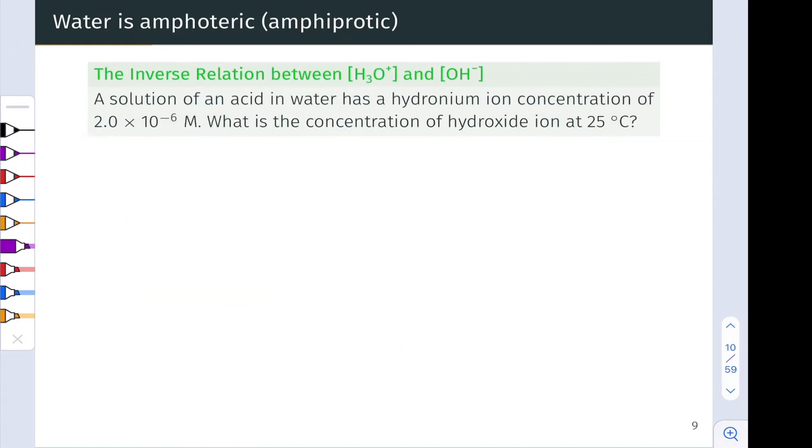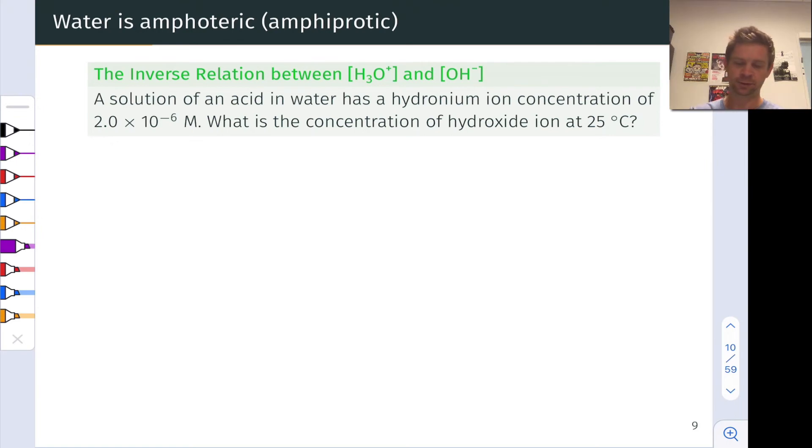Acids and bases can generate hydronium and hydroxide respectively in water. When an acid is dissolved in water, the hydronium ion concentration becomes quite a bit greater than 10 to the negative 7 moles per liter. In this problem we're told that a solution of an acid in water has a hydronium concentration of 2 times 10 to the negative 6 moles per liter. We're asked, what is the concentration of hydroxide ion in this solution at 25 degrees C, which enables us to use the familiar value of Kw?